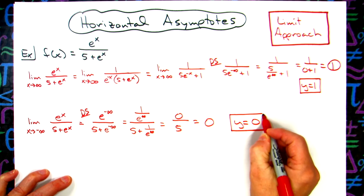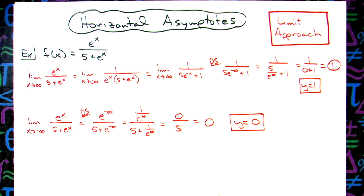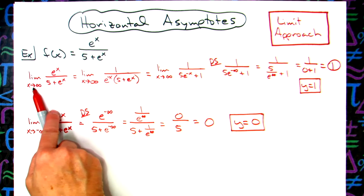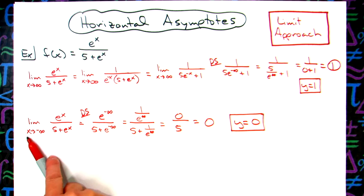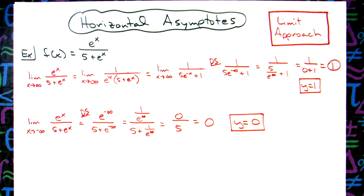So that's one approach to finding horizontal asymptotes by using the limit. You can take the limit as x approaches infinity and as x approaches negative infinity. This is typically done in calculus class when you first learn limits and apply them to finding horizontal asymptotes. Thanks for watching — if the videos are helping, please share with your friends and subscribe to the channel.